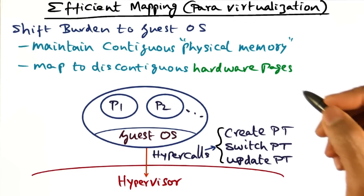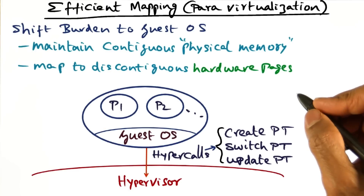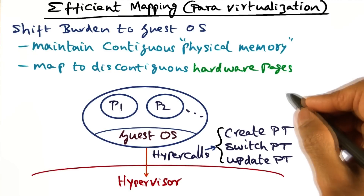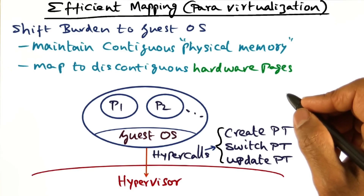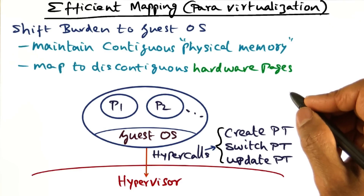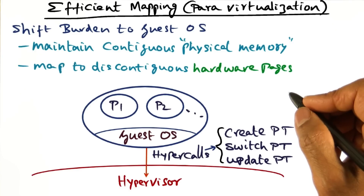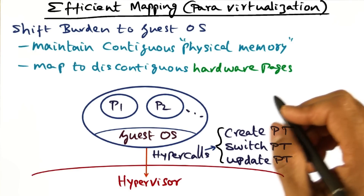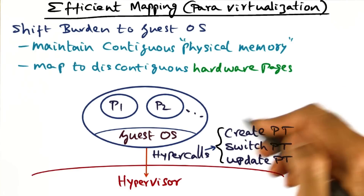At the outset, handling virtual memory was described as the thorny issue. Doing the mapping from virtual to physical on every memory access without the intervention of the guest operating system is the key to good performance. This can be done in both fully virtualized and para-virtualized settings by the tricks discussed here.